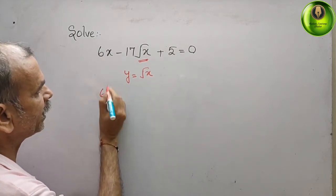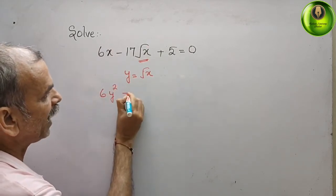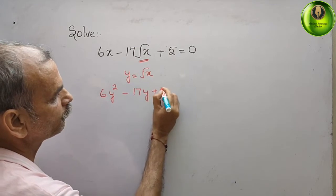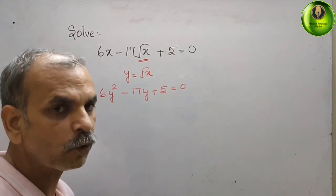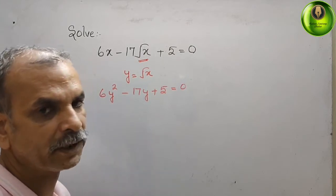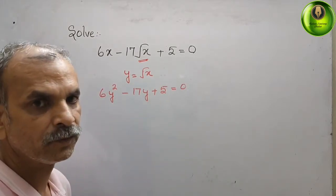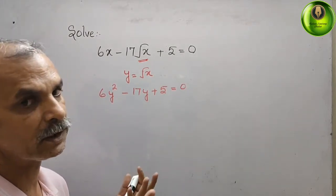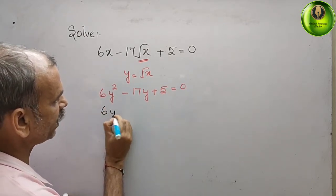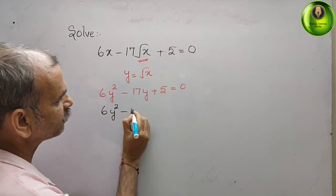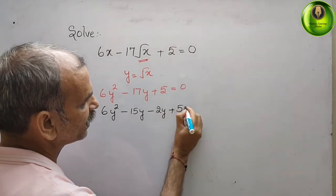With the substitution, the new equation becomes 6y squared minus 17y plus 5 equals 0. Now we will go for middle term splitting. We can see that 6 into 5 is 30, and 15 into 2 is also 30, so we split the middle term as 6y squared minus 15y minus 2y plus 5 equals 0.